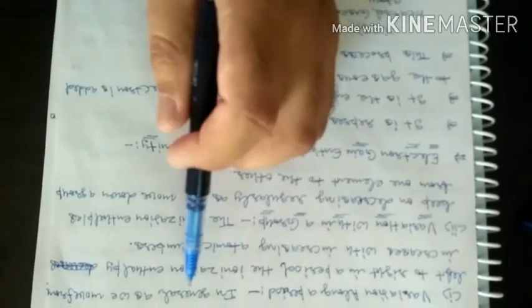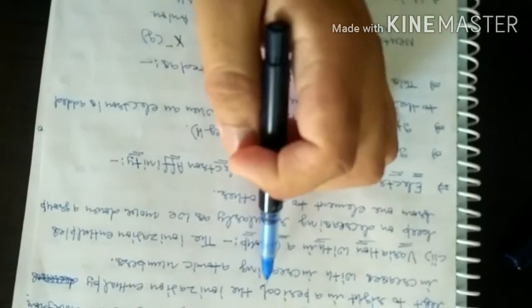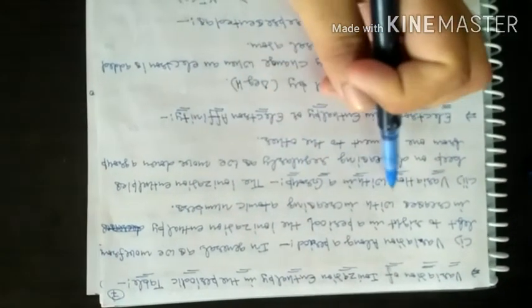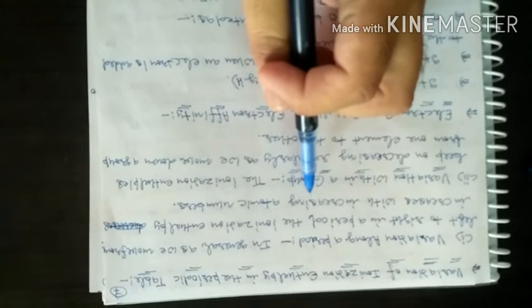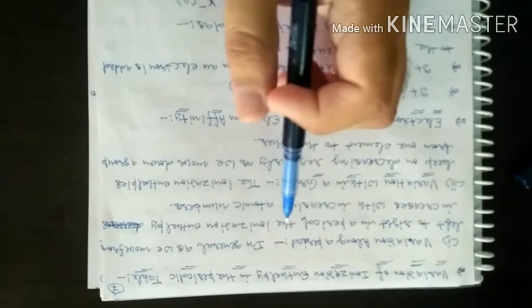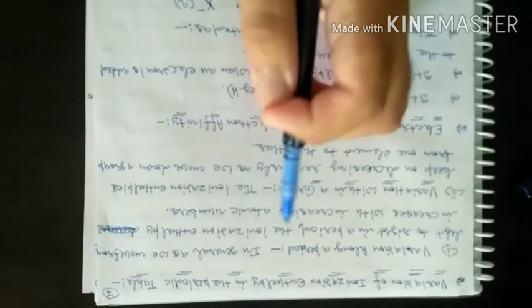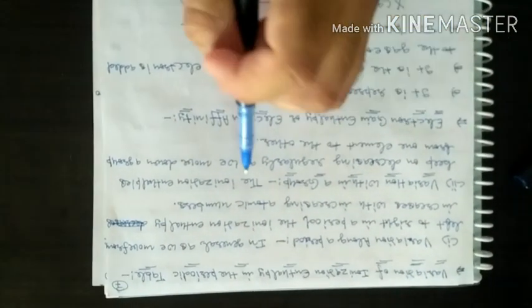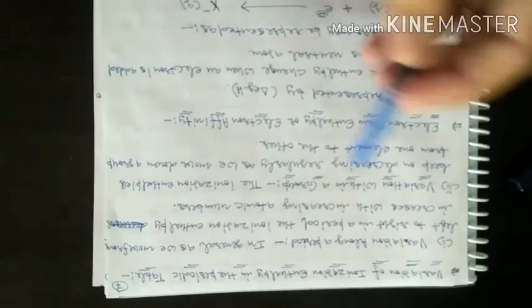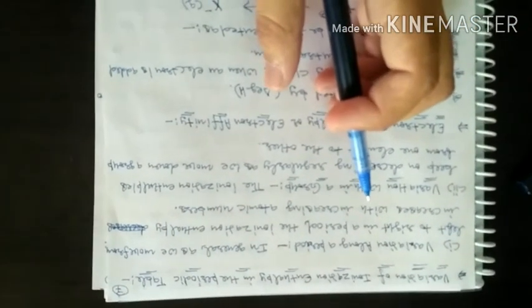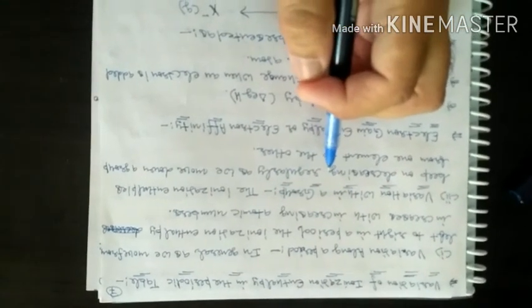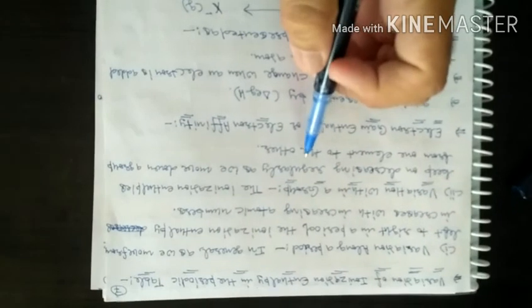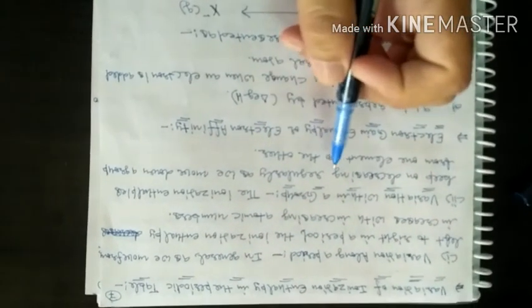Now let's discuss variations of ionization enthalpy. Along a period, moving from left to right, ionization enthalpy increases because atomic number increases, nuclear charge increases, forces of attraction become stronger, and more energy is needed. Within a group, going down, atomic size increases, the electron is further from the nucleus, and can be removed more easily, so ionization enthalpy decreases.